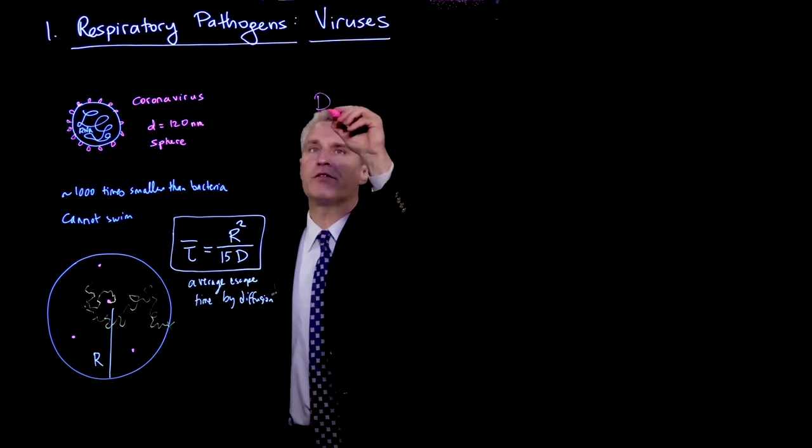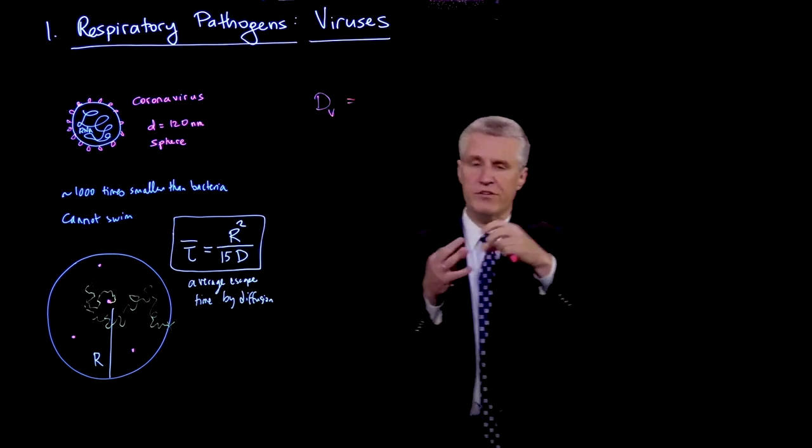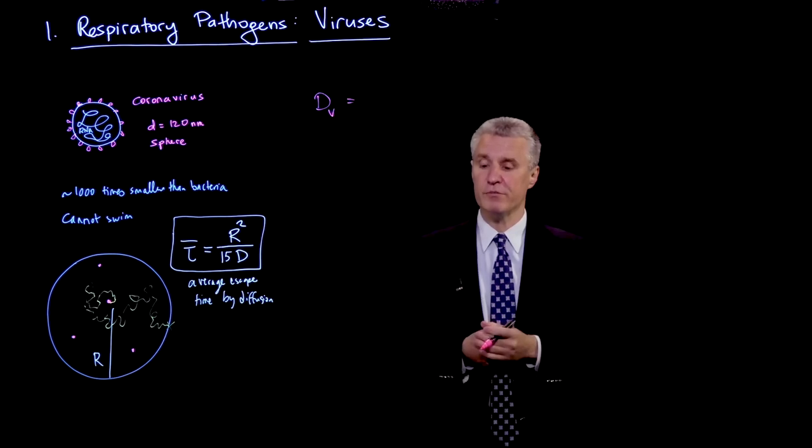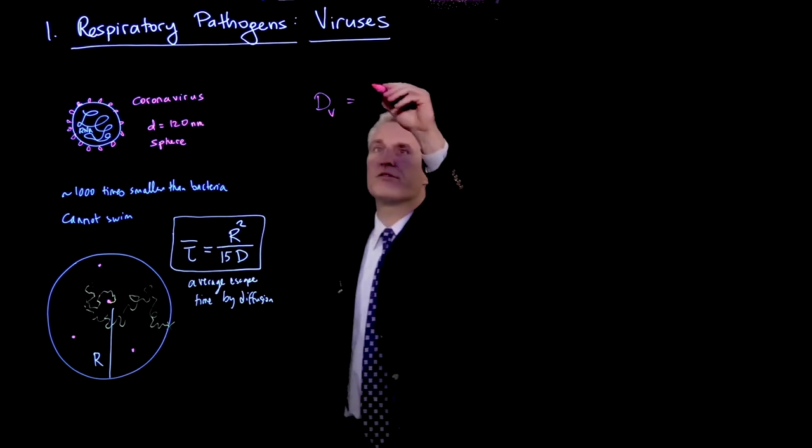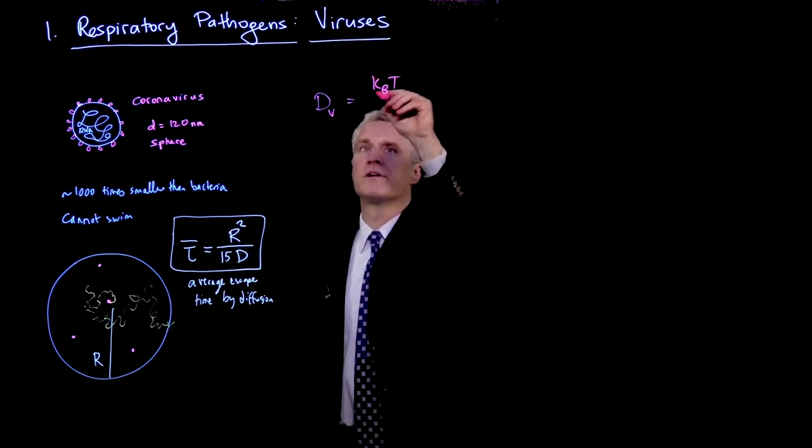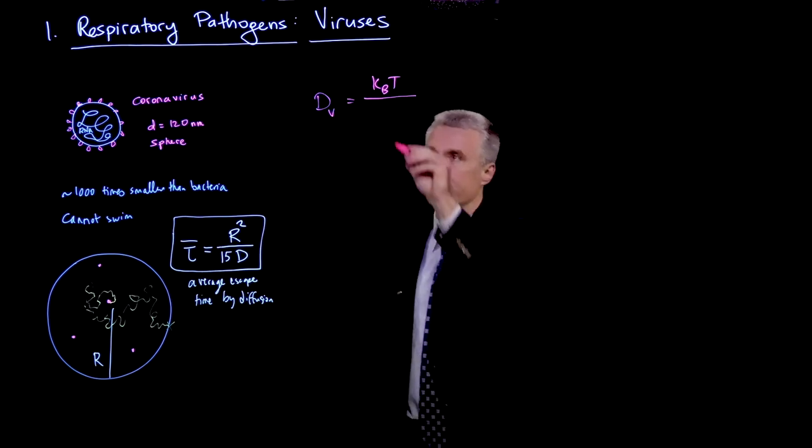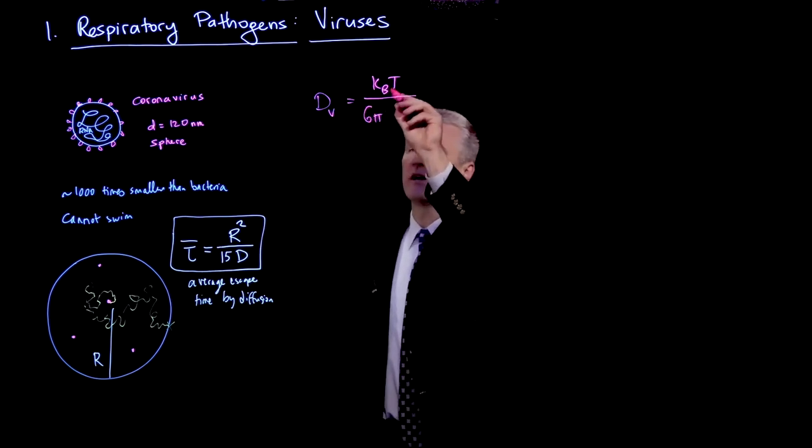Well, the diffusivity of the virus, if you think of it just as a fluctuating sphere in a viscous medium, then we can use the Stokes-Einstein formula for the diffusivity, which is kBt, where k is Boltzmann constant and t is the temperature.